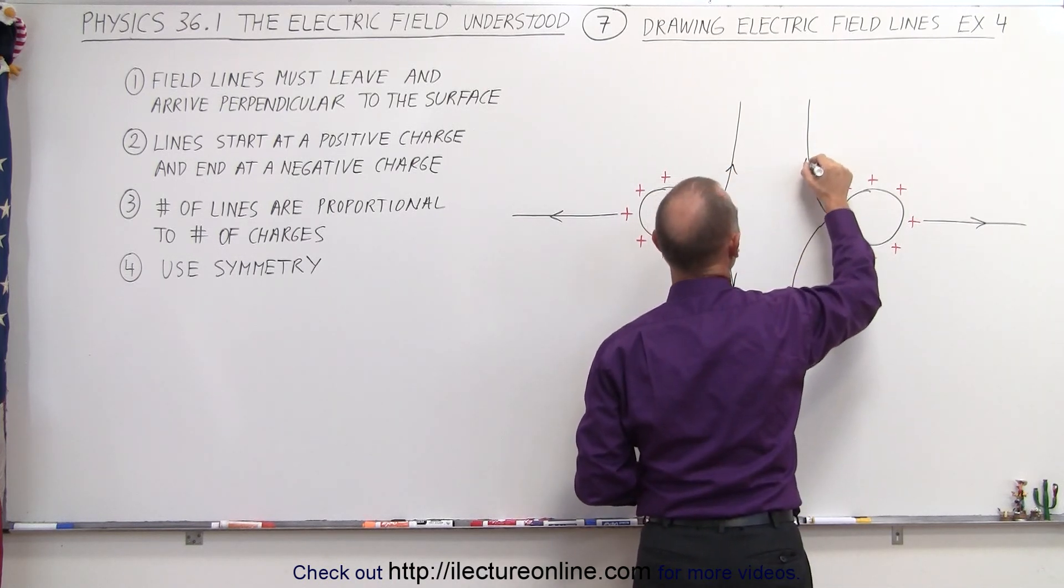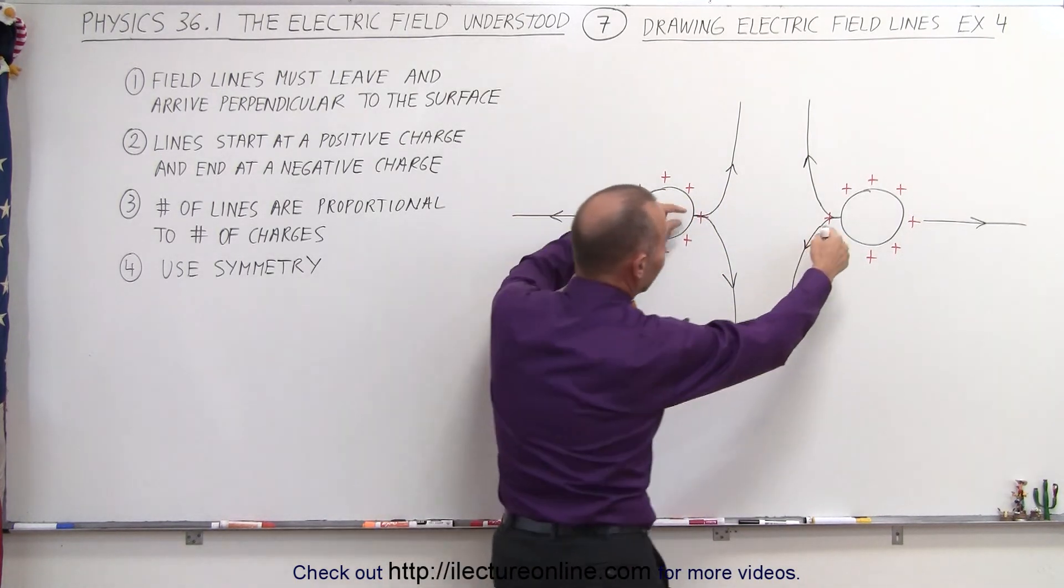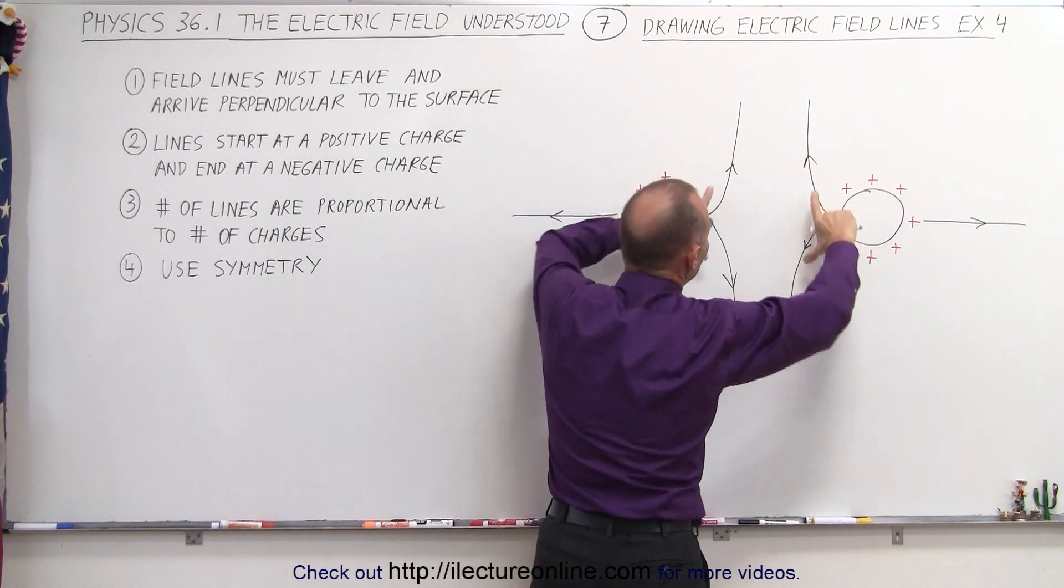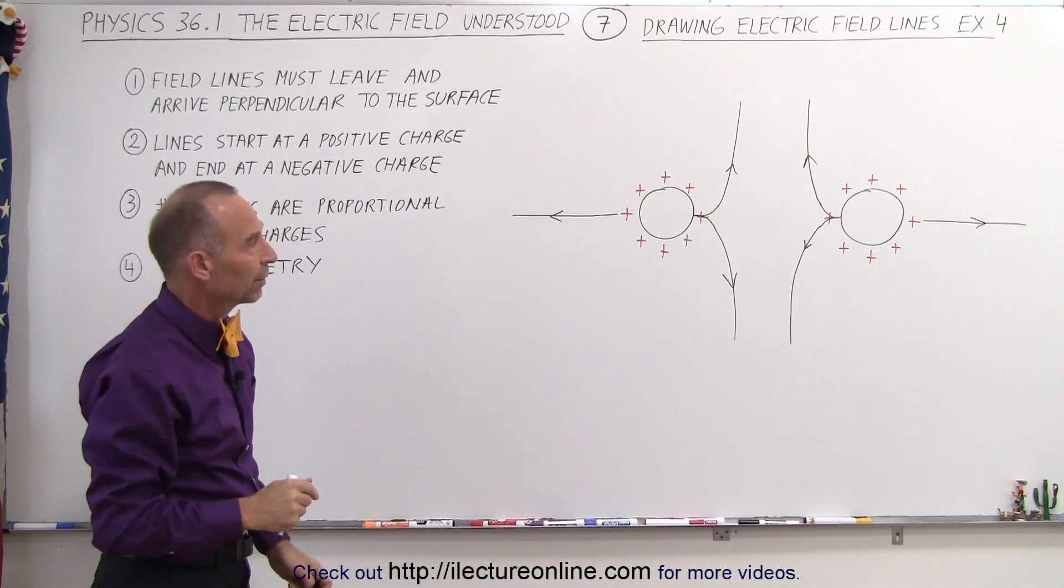So the field will split up like this, and instead of having a single line coming out, you do have a single line coming out, but then it'll split equally in both directions to maintain the symmetry, the rule number four here on the board.